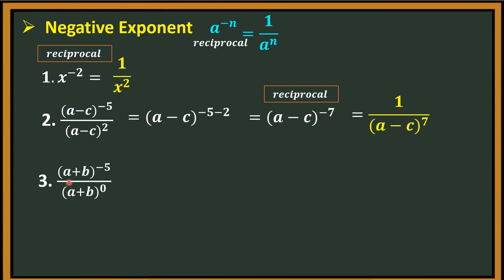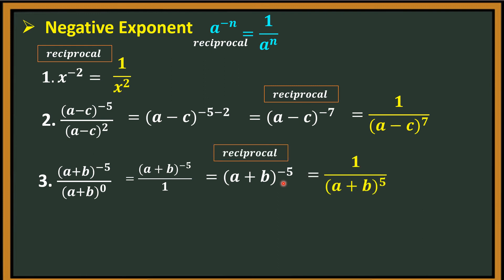Number 3: quantity a plus b, quantity raised to negative 5, over quantity a plus b, quantity raised to 0. Notice the denominator is raised to 0, so it automatically equals 1. We will have quantity a plus b, quantity raised to negative 5, over 1. Simplifying, that is quantity a plus b raised to negative 5. Since the exponent is negative, get the reciprocal — 1 over quantity a plus b, quantity raised to the 5th power.